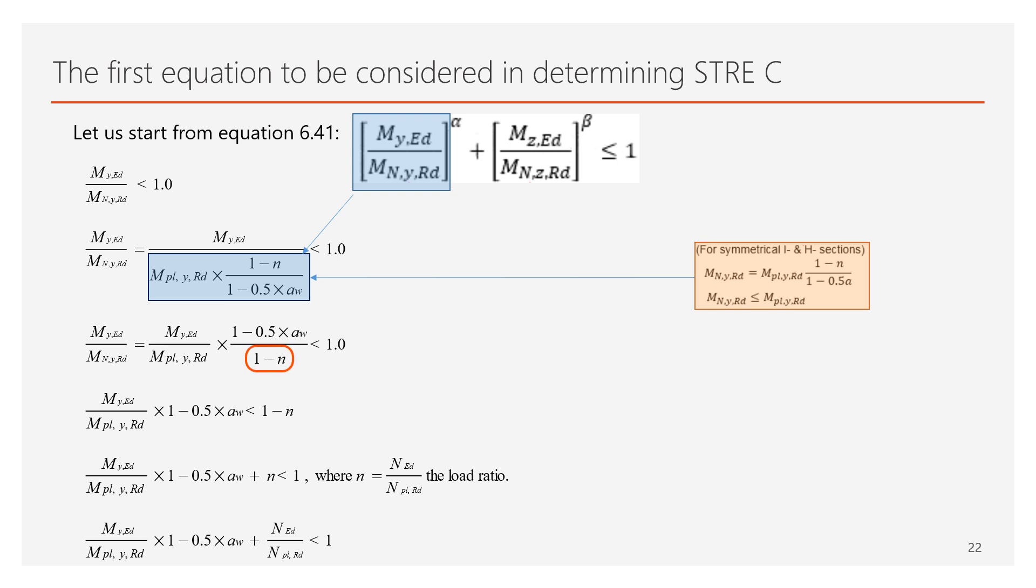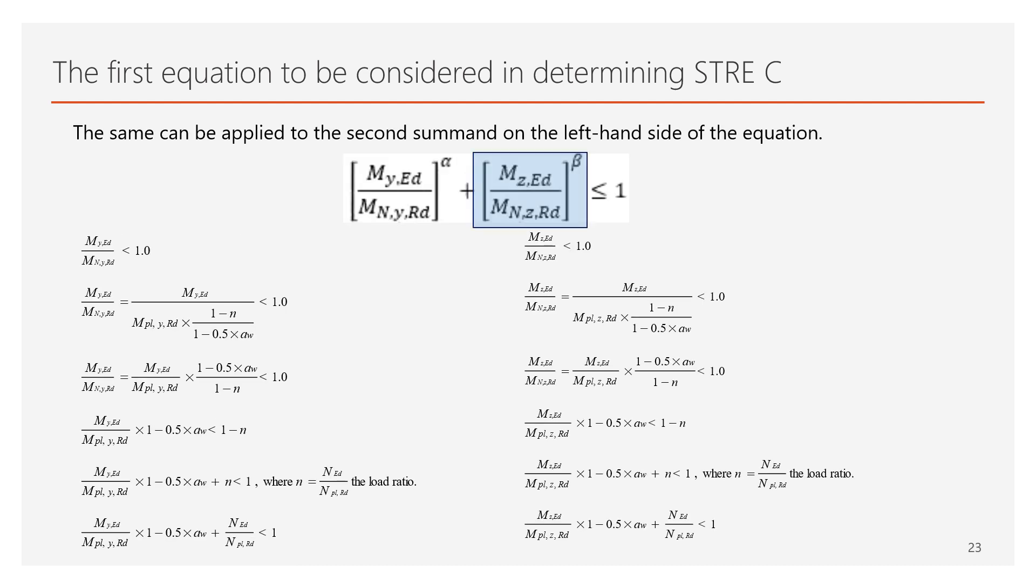Also, this equation is the first one to be considered when the STRE-C command is called. For the sake of simplicity, I will say equation furthermore, although it's an inequality. The current slide presents the case when the first summand of equation 6.41 is being derived. Namely, the MYED over MNYRD term can be extended to MYED over MPLYRD times 1 minus 0.5A over 1 minus N, where N equals to NYED over NPLRD.